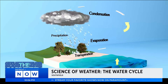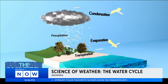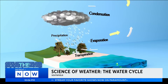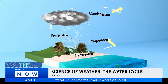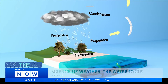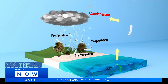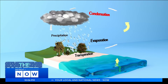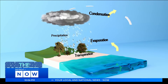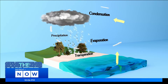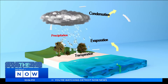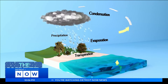As the relatively warmer water vapor rises, the cooler air aloft causes the water vapor to turn back into a liquid water phase, creating clouds. That is known as condensation. Eventually, when the cloud becomes full of liquid water droplets, it falls from the sky in the form of precipitation, like rain and snow. Then the cycle starts over again.